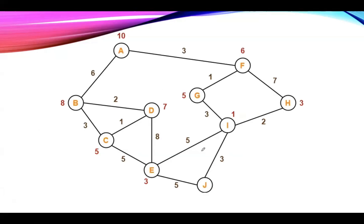Let us take an example. The numbers written on the edges represent the distance between nodes, while the numbers written on the nodes represent the heuristic values. Our task is to find the cost-effective path from start state A to the final state J. We will solve this example using the A* algorithm.